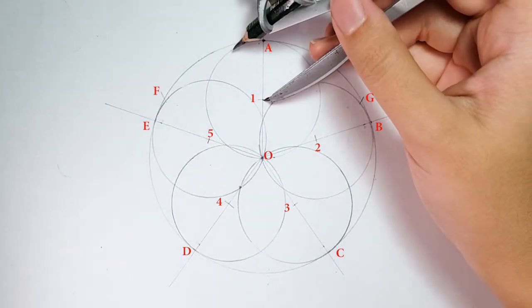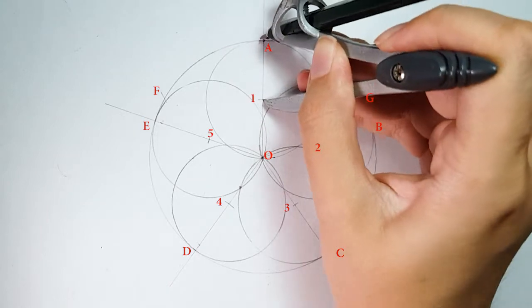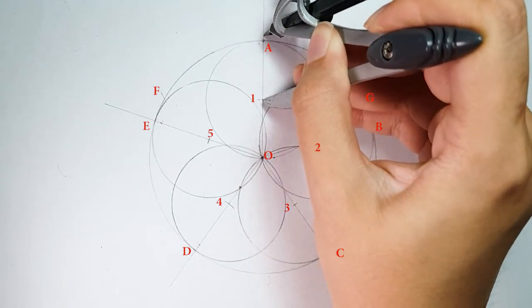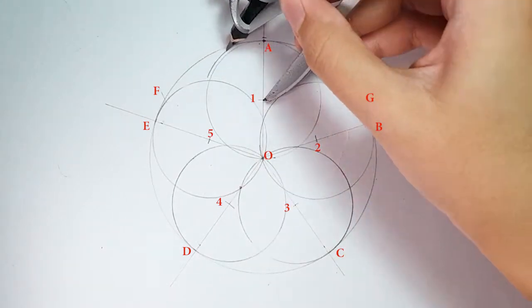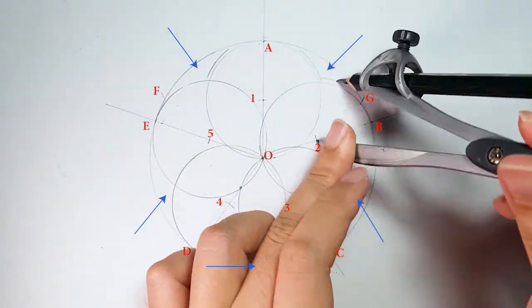Now, place your compass on point 1 and adjust slightly bigger than radius length. Then draw an arc within this area.